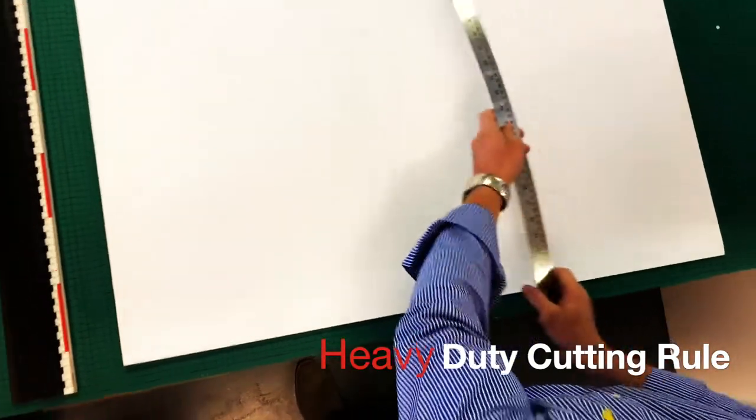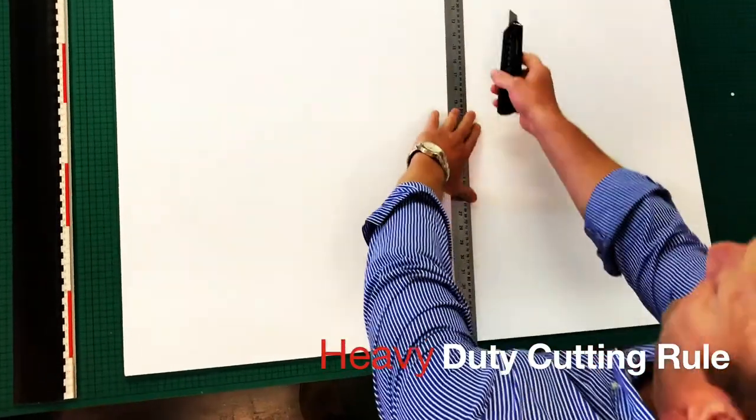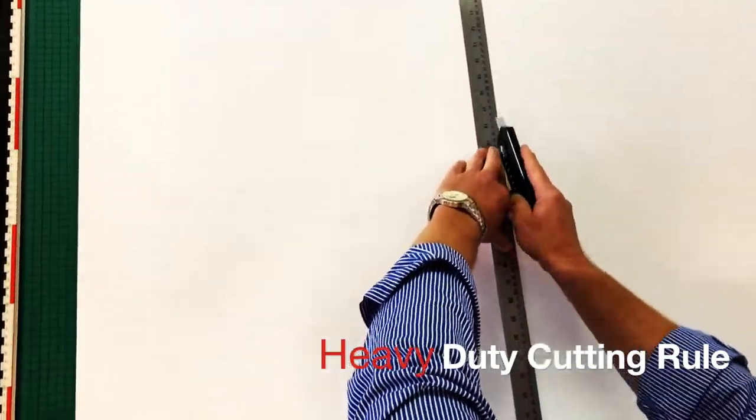The same old problem you have with a thin ruler is you put that on there and when you start cutting chances are you're going to get your fingers in the way and we don't want any accidents like that.